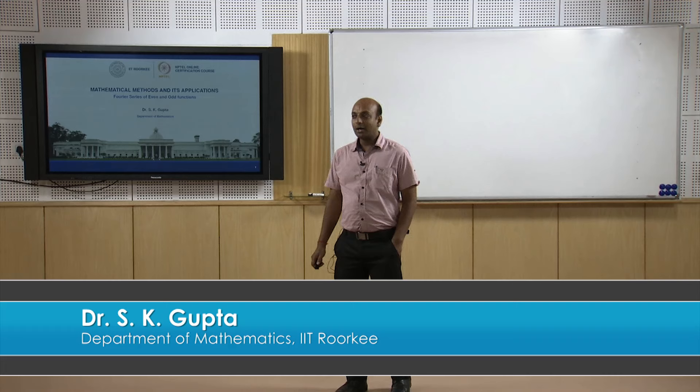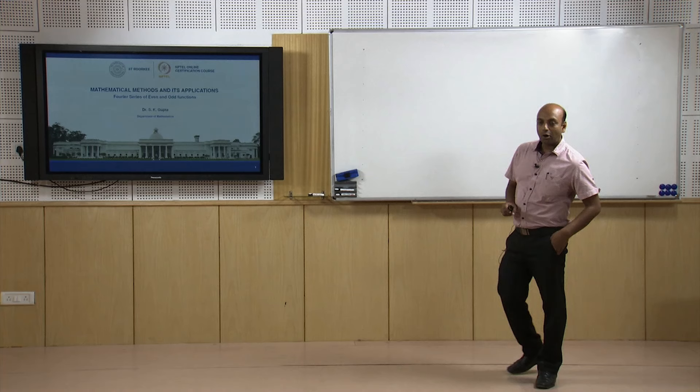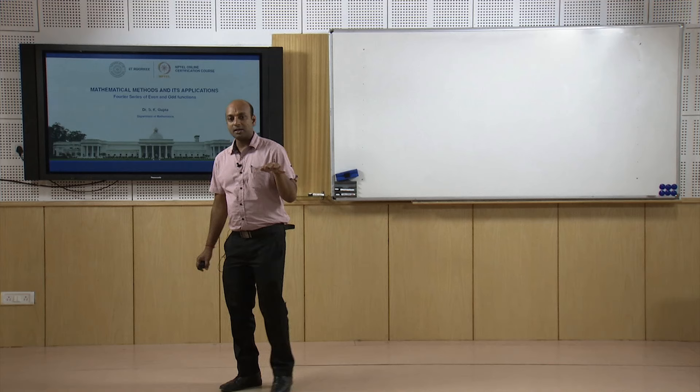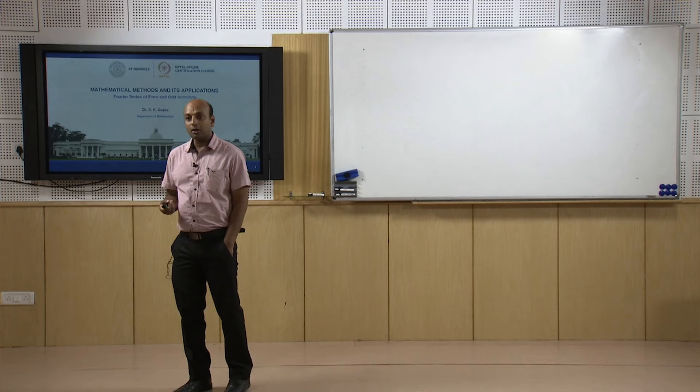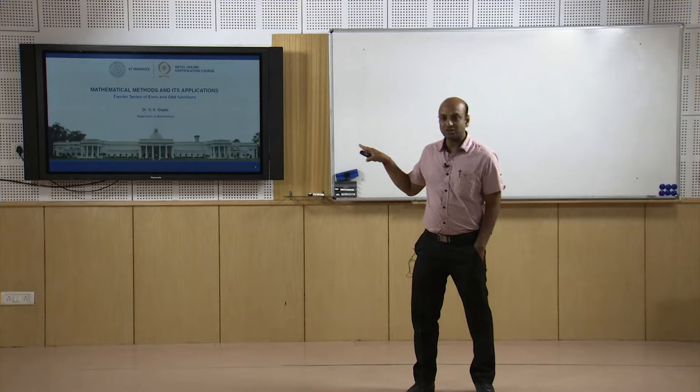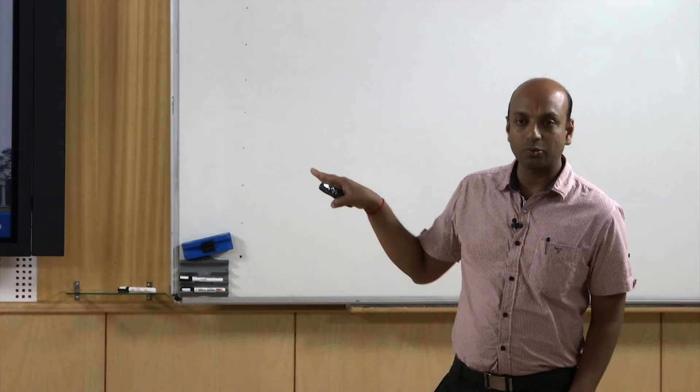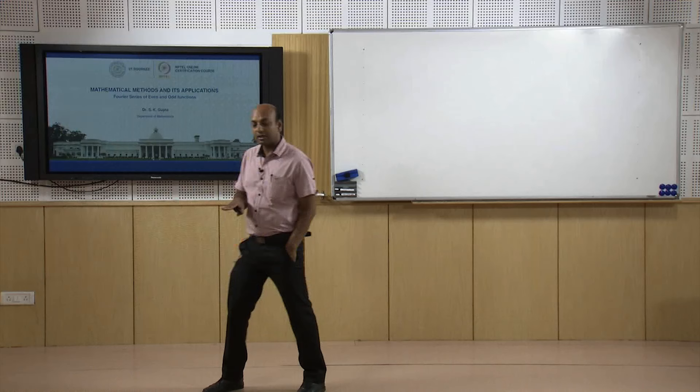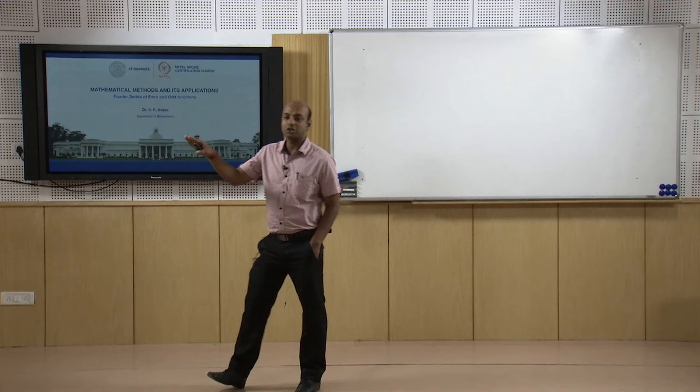Welcome to the lecture series on Mathematical Methods and Applications. In the last two lectures we discussed Fourier series and its convergence — how we can expand a periodic function f(x) in a series of trigonometric functions of sine and cosine. When a function is continuous with continuous first and second derivatives, f(x) converges to that series. Even for piecewise continuous periodic functions, convergence holds if left and right derivatives exist at each point.